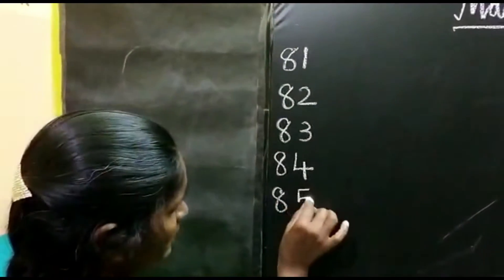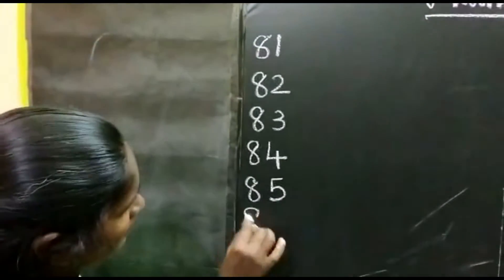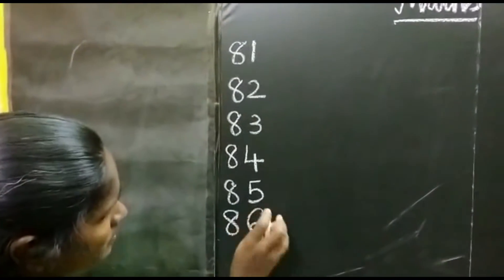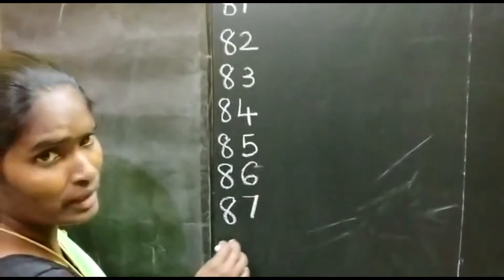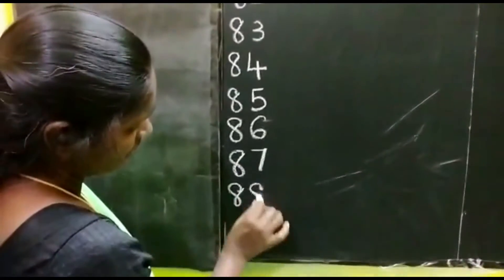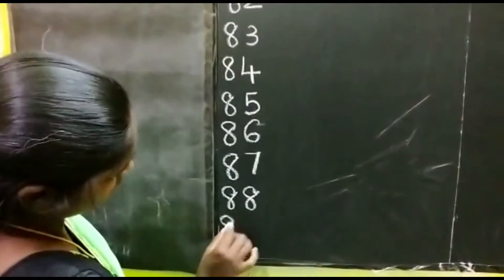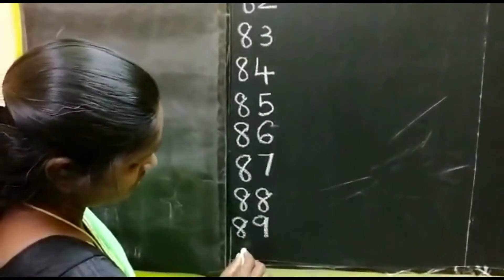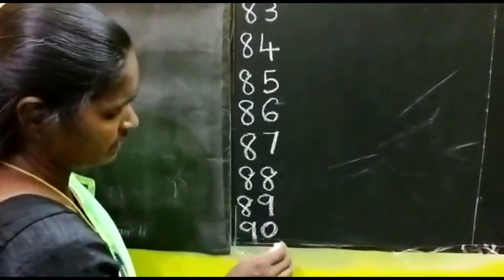8, 5. 85. 8, 6. 86. 8, 7. 87. 8, 8. 88. 8, 9. 89. 9, 0. 90.